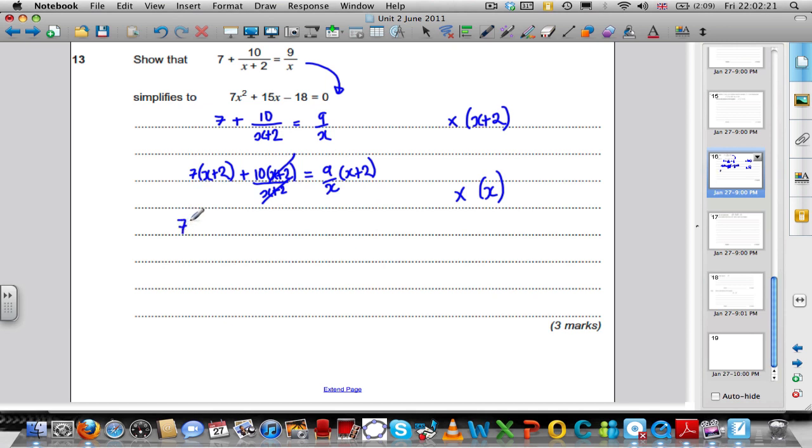So I'm going to do 7X plus 2 multiplied by X plus, this was just 10 now, so it's going to be 10X is equal to, well 9 over X multiplied by X just gives me 9, so I would get 9X plus 2.